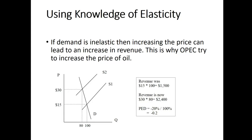Knowledge of elasticity can be used to make practical business decisions in the context of pricing strategy. When demand is inelastic, increasing the price can actually increase revenue. This is exactly what organizations like OPEC attempt to do when they try to raise oil prices. Looking at the graph, the demand curve D shows the relationship between price and quantity demanded. The initial price is $15 and quantity demanded is 100 units, giving revenue of $1,500. When price increases to $30, quantity demanded drops slightly to 80 units.